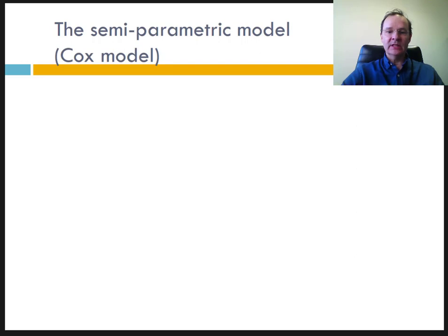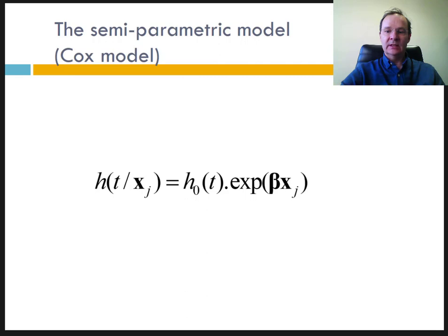The Cox model can be seen as the control of the effect of explanatory variables in survival analysis through regression, or as the introduction of the temporal dimension in the regression. The advantage of one technique makes it possible to fill the gaps of the other.